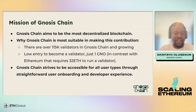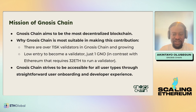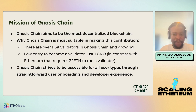Gnosis Chain aims to be the most decentralized blockchain. We have tools to measure decentralization. Currently there are around 15,000 validators on Gnosis Chain, and the entry requirement is just one GNO. This is why we have the two-token system. GNO is used for validators, and you only need one GNO to become a validator — compared to Ethereum which requires 32 ETH.